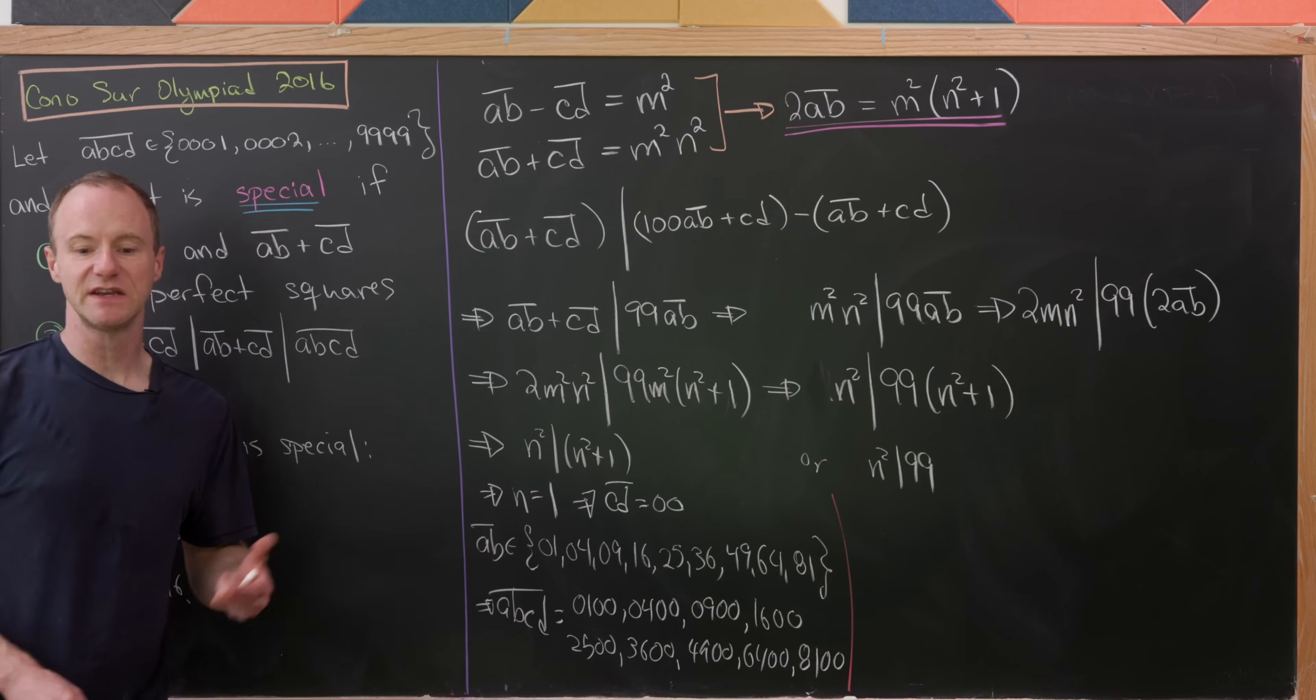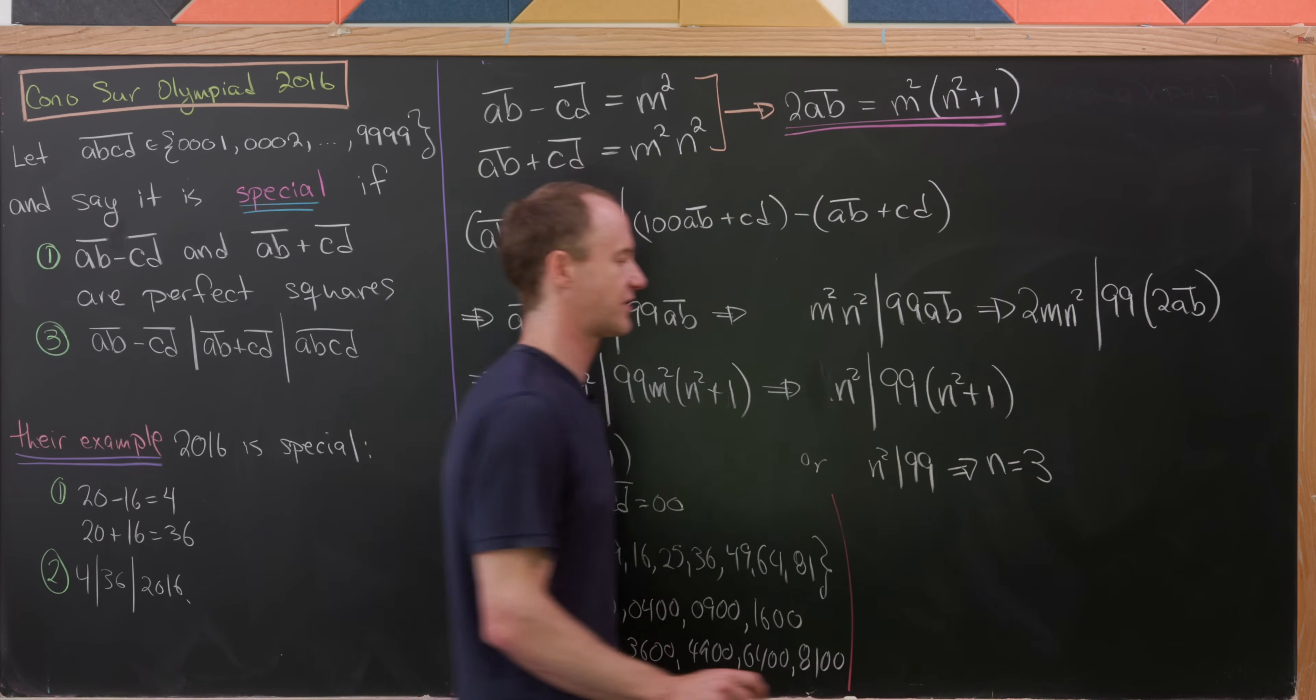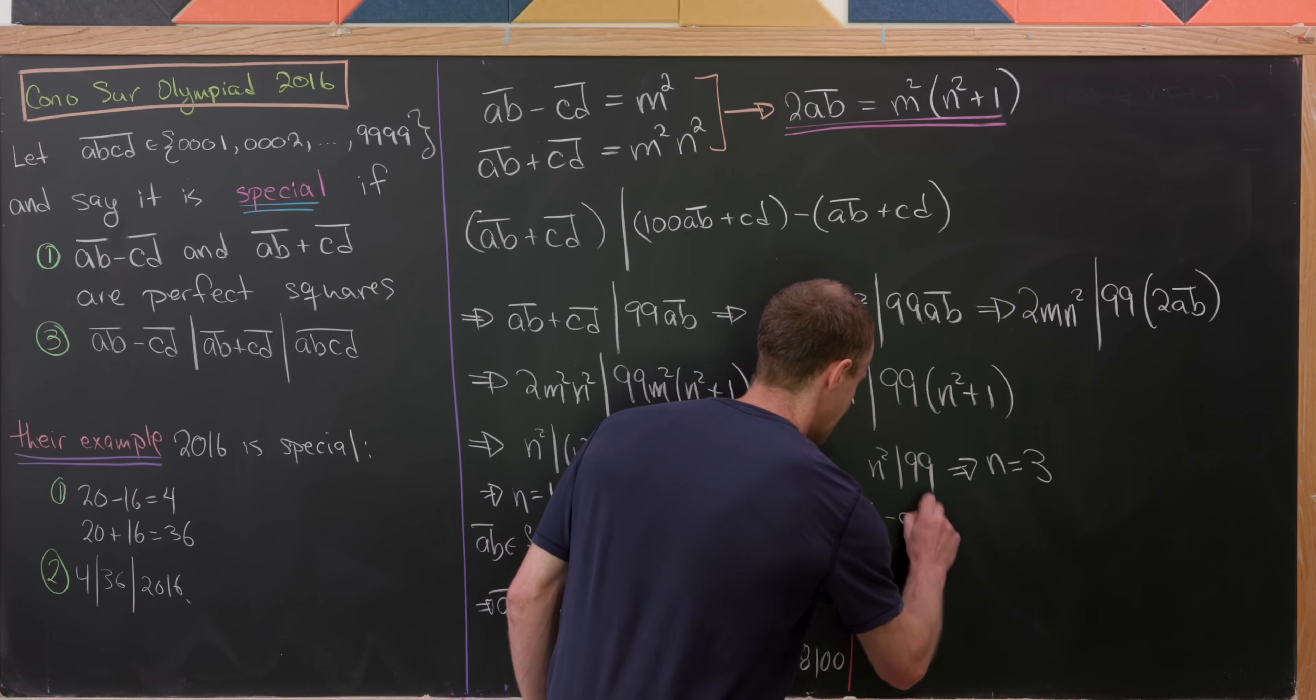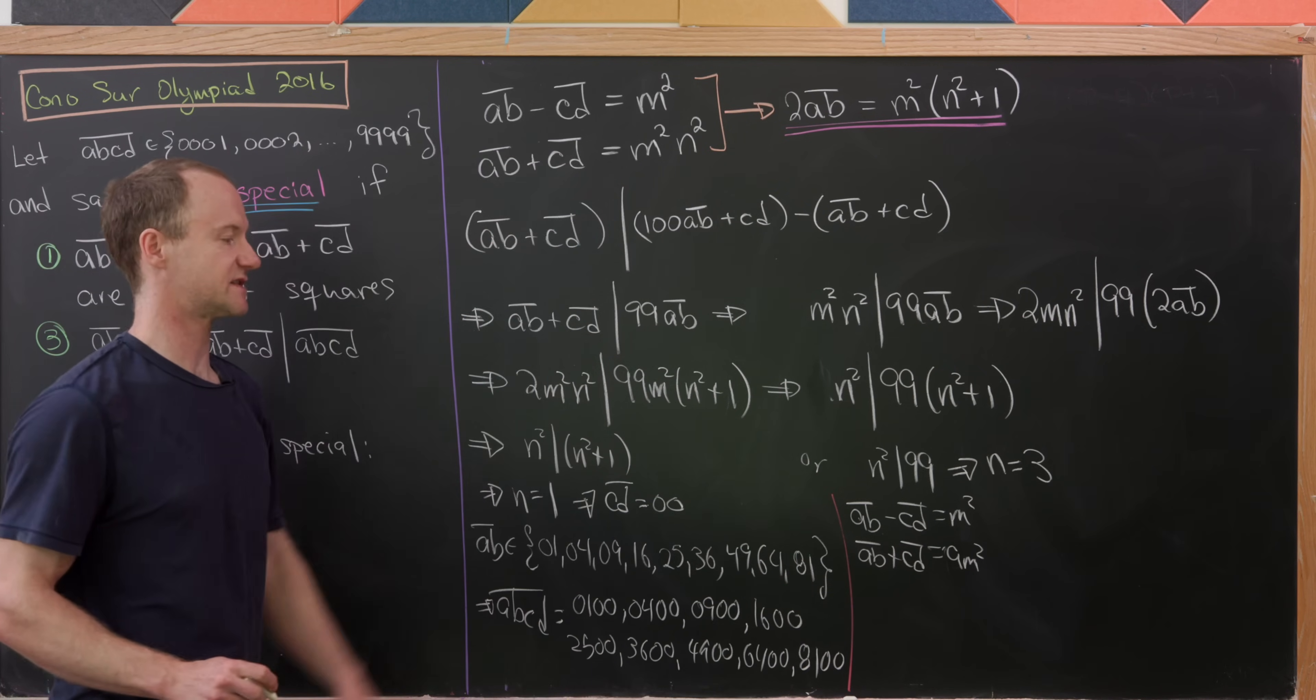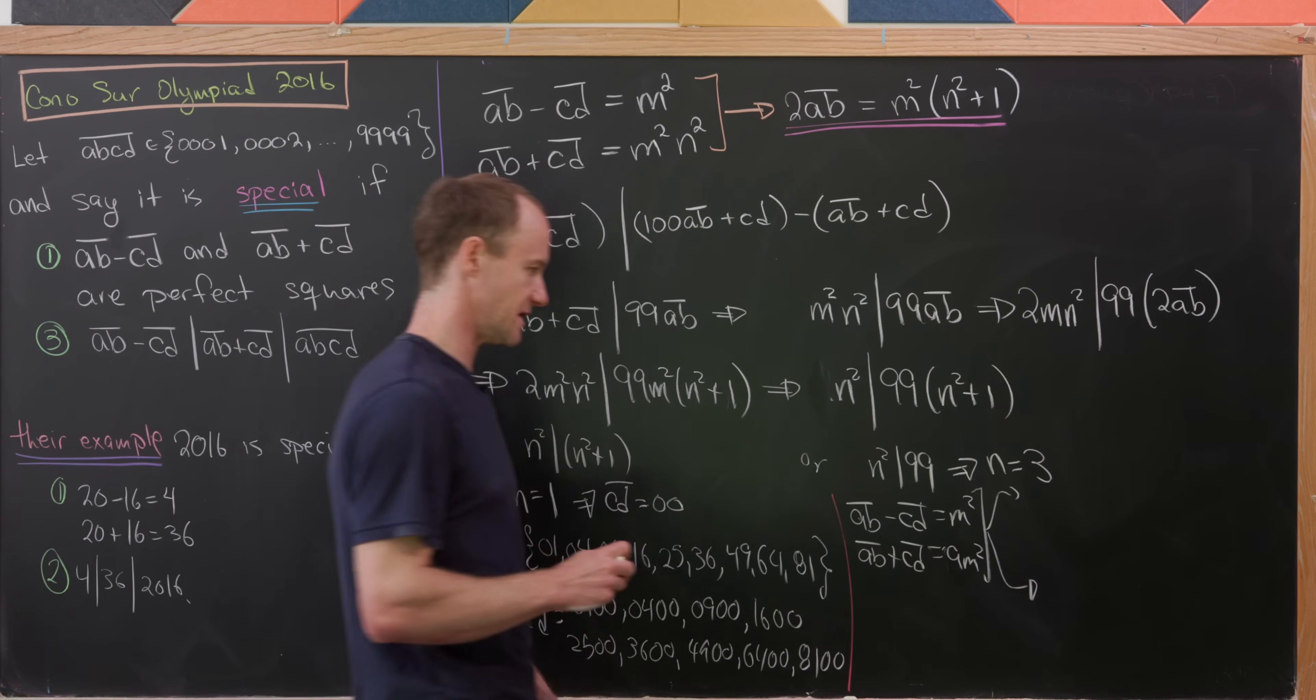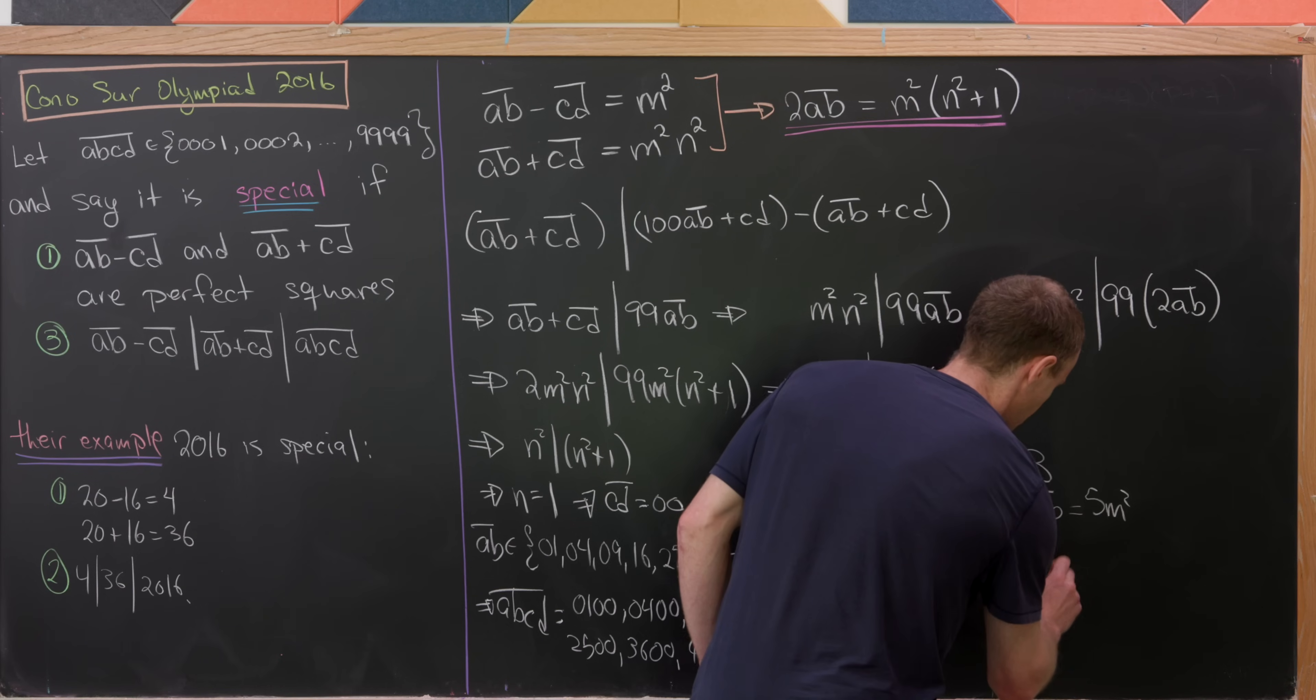Now let's see what we get from the second case. If N squared divides 99, then N equals 3, the only perfect square that divides 99. That gives us the system: AB minus CD equals M squared, and AB plus CD equals 9M squared.